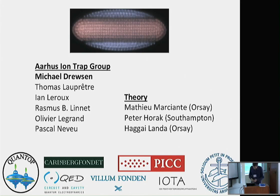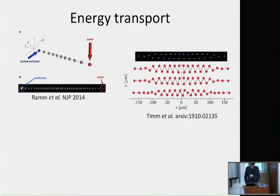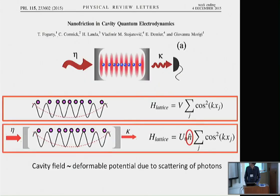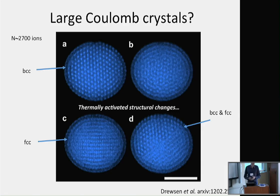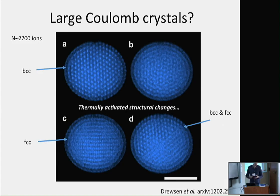A follow-up question on the 3D crystal images: what is the timescale on which these changes occur? The images were taken with about 100 millisecond exposure time, so changes occur in less than a second. In fact many times they change much faster — it's actually hard work to get nice pictures because usually they change much faster.